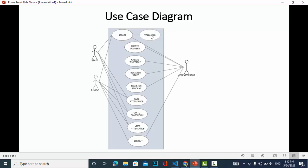The third module is student. The student can log into the system, that should be validated, and the student can take attendance. The student can go to the classroom, the student can view the attendance, and also the student can log out from the system.